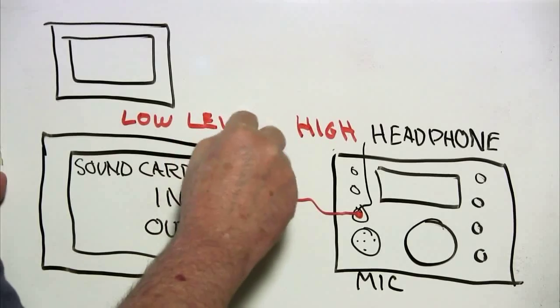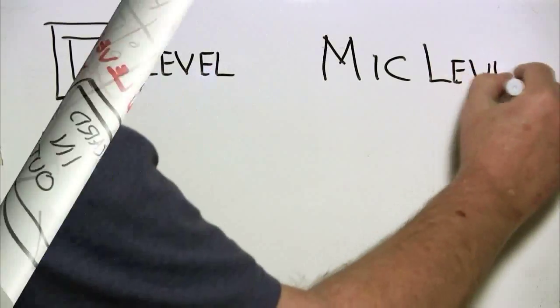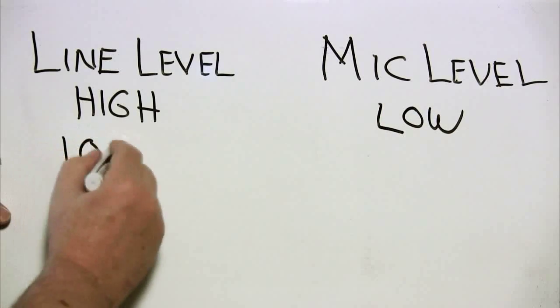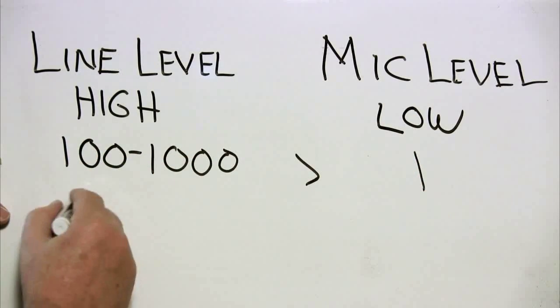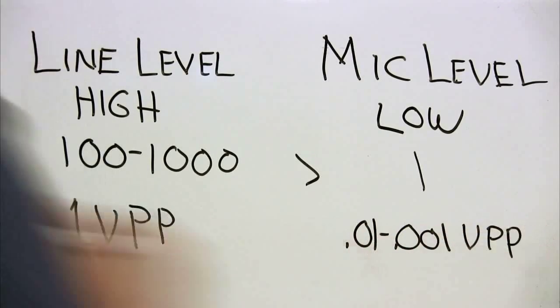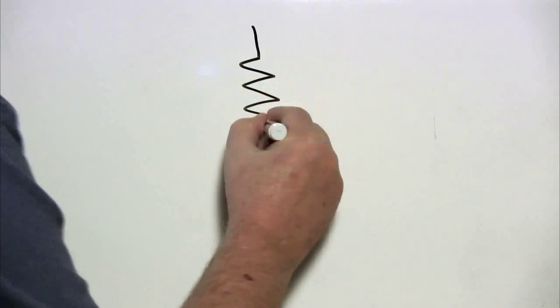So a line level on a computer is typically 100 to 1,000 times greater than a mic level. Line level is around a 1 volt peak to peak signal, whereas a mic level can be around 10 millivolts to 1 millivolt.